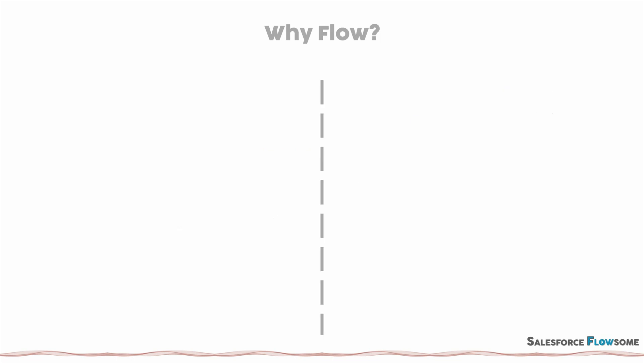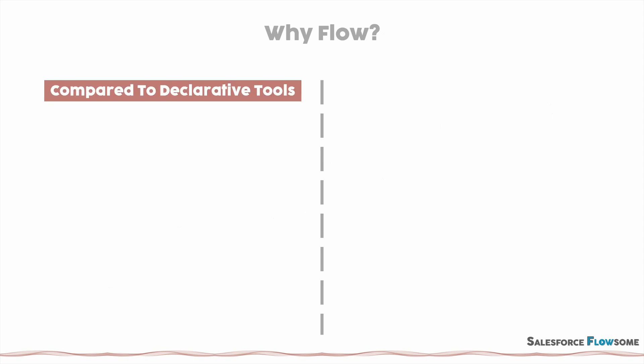But then why flow? If we compare flow to both declarative tools and programmatic tools, there are actually several benefits. First, as compared to other declarative tools, flow is actually more flexible, like we just discussed. Whenever I started with flow, I was so surprised about all the things I can achieve with flows. The second point is flow is actually easier to debug. This might sound a bit counterintuitive because we just said that flow is more complex. However, flow provides the built-in debug mode, so you can test your solution within the same interface — something we didn't have with workflow and process builder.